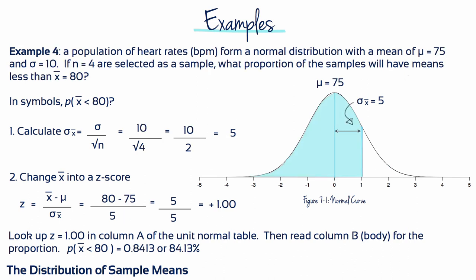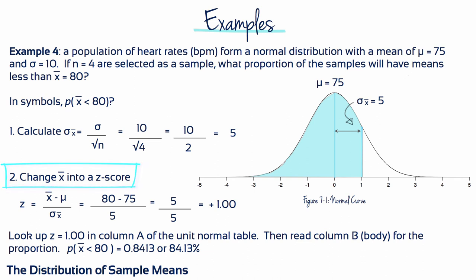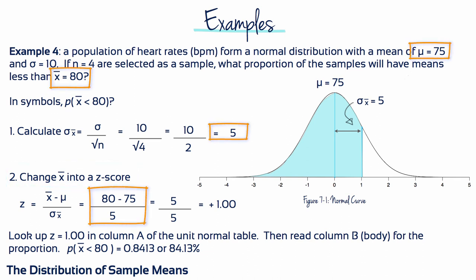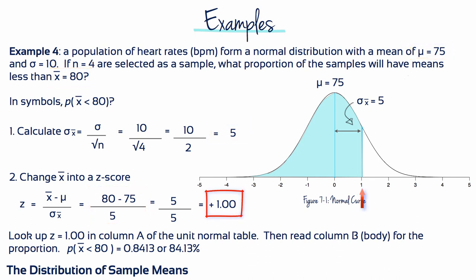Example 4: A population of heart rates forms a normal distribution with a mean of 75 and a standard deviation of 10. If n equals 4 are selected as a sample, what proportion of the samples will have means less than 80? The standard error is 10 divided by the square root of 4, which equals 5. Changing the sample mean into a z-score: 80 minus 75 divided by the standard error gives us a z-score of plus 1. Looking up plus 1 in the unit normal table gives us a probability of 0.8413, or 84.3% — it's quite probable that choosing 4 people from a sample, their average heart rate is going to be lower than 80 beats per minute.